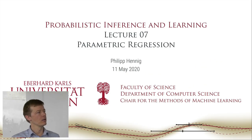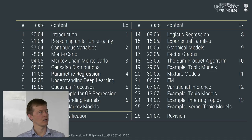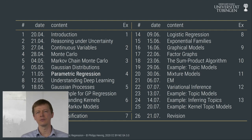Welcome to lecture number seven of probabilistic machine learning. In the first six lectures we saw that probabilistic reasoning is an extension of propositional logic that allows us to reason with uncertain statements.